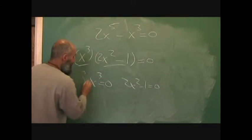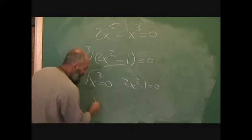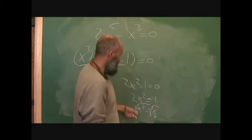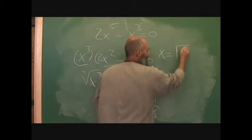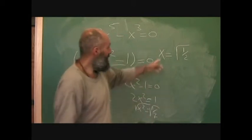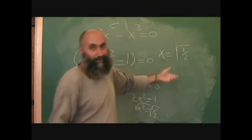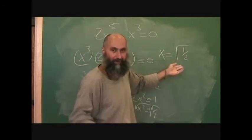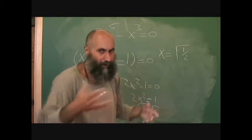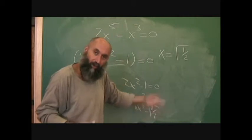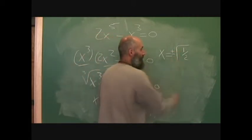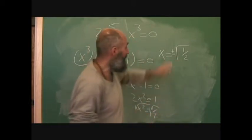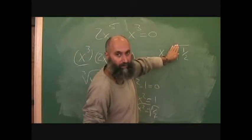So x cubed is equal to zero, and 2x squared minus 1 is equal to zero. Taking the cube root of both sides to solve for x — the opposite of cube — so x is equal to zero. For 2x squared minus 1 equals zero, the solution is going to be x is equal to the square root of 1 over 2. That's a partial answer. This is correct for grade 8 and 9. If you're in grade 10 or above, the square root of anything is always plus or minus. So this is actually plus or minus the square root of one half.